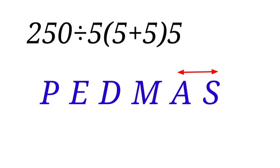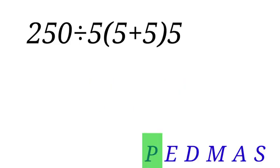Now, let us come back to our question. In PEDMAS, P is for parentheses. And we have parentheses in our question here. So we have to address that first. So, 5 plus 5 equals 10.